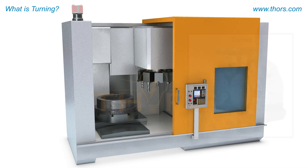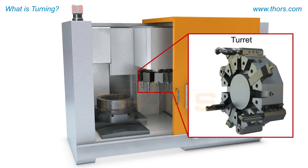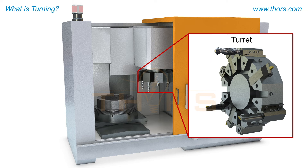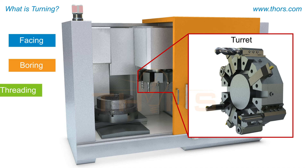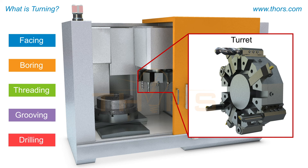Across from the spindle is the turret, which houses multiple cutting tools of various types. With several cutting tools available, the turning center is able to perform a series of different operations such as facing, boring, threading, grooving, and drilling.